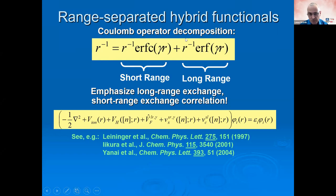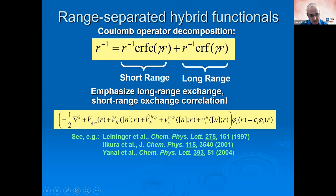The solution is the range-separated hybrid functional, a lovely idea due to Andreas Savin. The Coulomb repulsion is split into a short-range term (complementary error function) and a long-range term (error function). The long-range part is treated with 100% Fock exchange, and the short-range part with GGA, retaining a good balance of exchange and correlation where it matters most. This gives the correct asymptotic potential by construction while keeping reasonable correlation. The resulting generalized Kohn-Sham equation has only long-range Fock exchange, only short-range GGA exchange, and correlation.